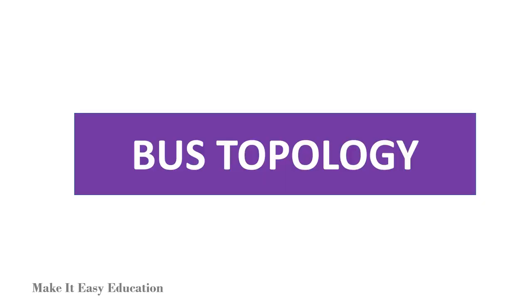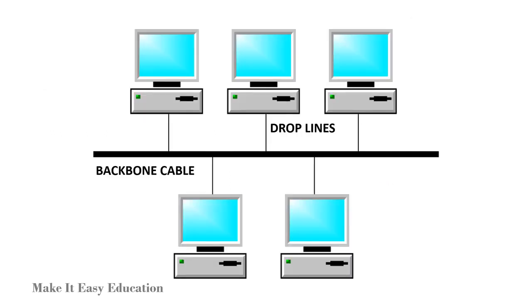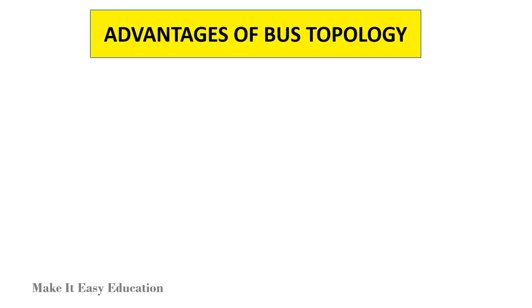Bus topology. In bus topology, there is a backbone cable, and all the devices are connected to this backbone cable through drop lines. Since all the data is transmitted over the main cable, there is a limit on the number of drop lines and the distance a main cable can have.